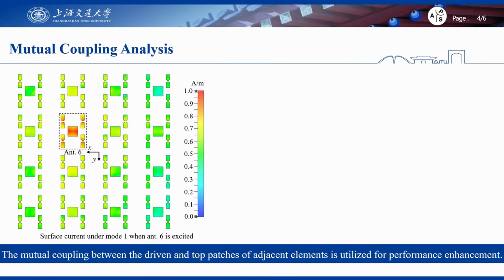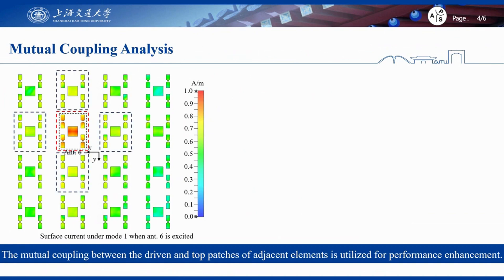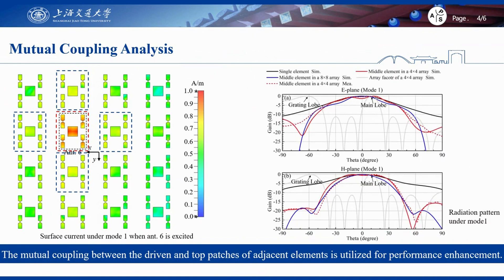In the array design, there is strong mutual coupling between the driven patch and the top patches of adjacent elements in the parasitic layer, which significantly affects the scanning performance. It can be observed that the surface currents of top patches in a given antenna are strong, while top patches in adjacent elements are also excited. With increasing array size, the beam under mode 1 becomes narrower due to mutual coupling. Thus, when beam scanning is carried out within 55 degrees under mode 1, the grating lobes of the proposed array with large element spacing can be suppressed.